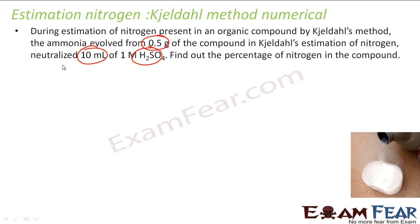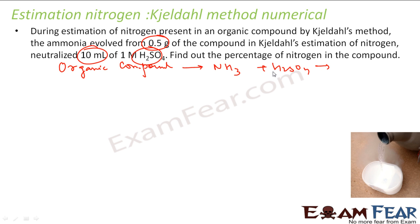The organic compound gives ammonia, and when this ammonia reacts with sulfuric acid, an acid-base neutralization occurs. From the balanced reaction: 2NH₃ + H₂SO₄ → (NH₄)₂SO₄, two moles of ammonia are required for one mole of sulfuric acid.